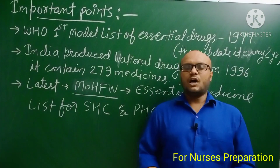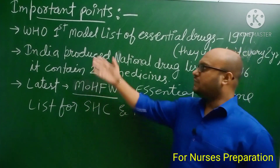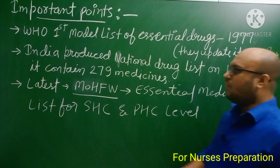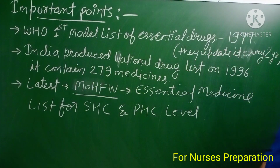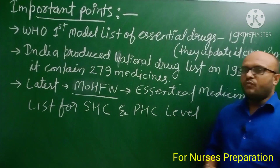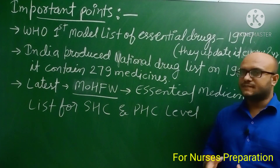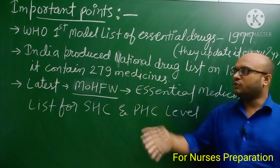WHO's first model list of essential drugs was produced in the year 1977, and they update this list every two years. In India, the national drug list was produced in 1996 and it contains 279 medicines.